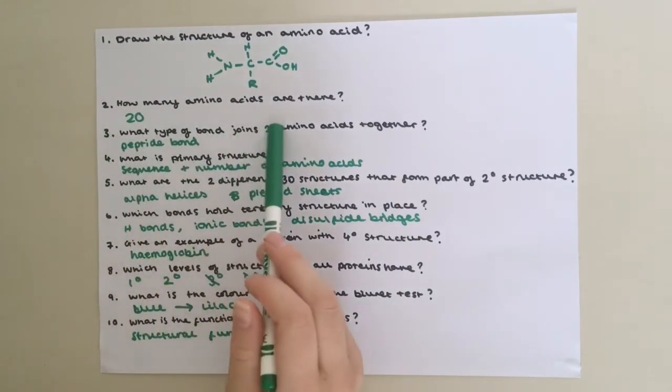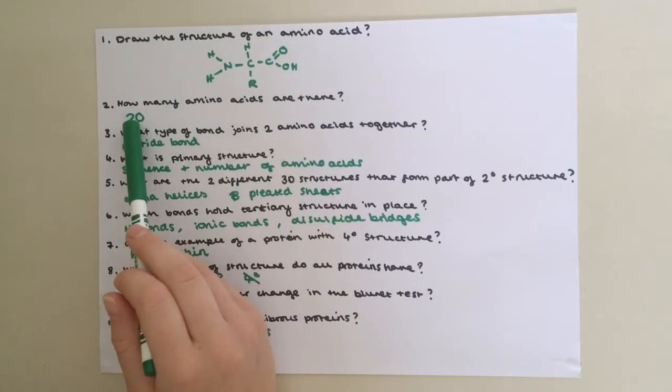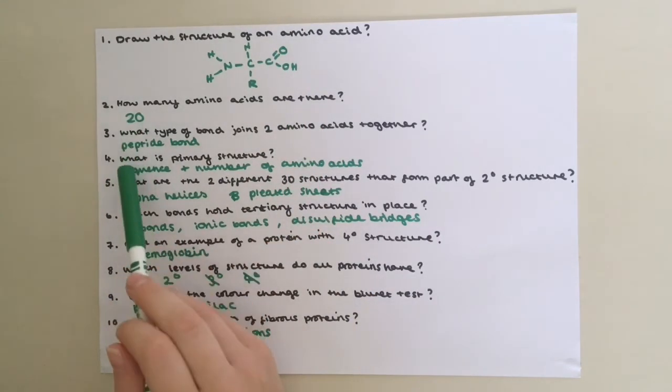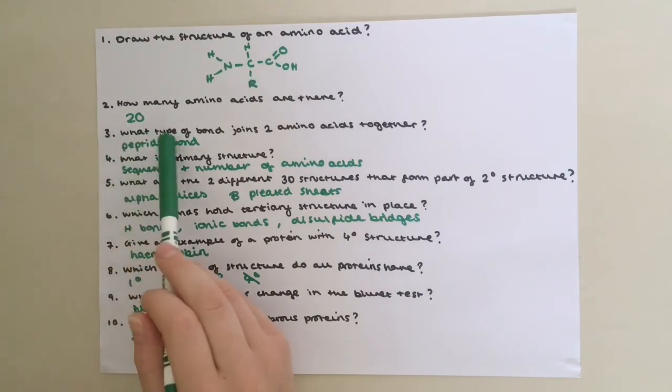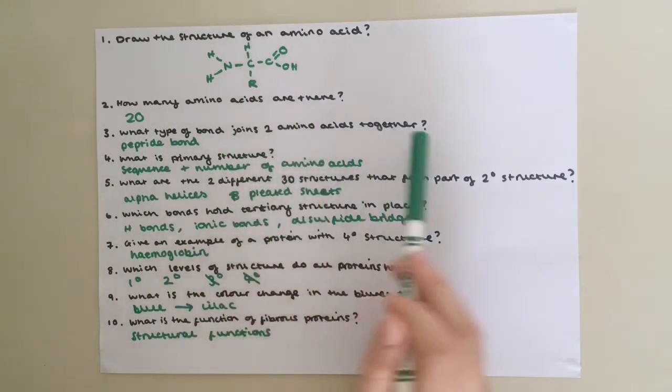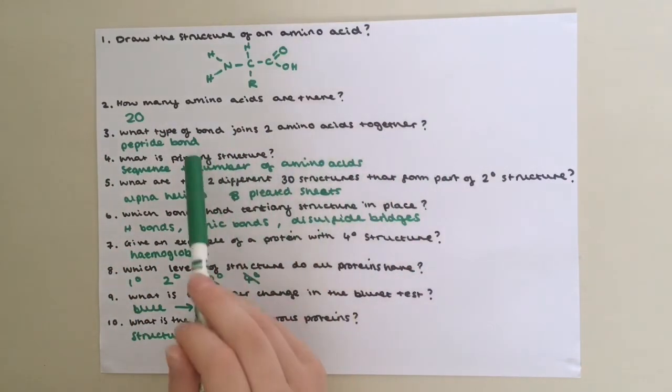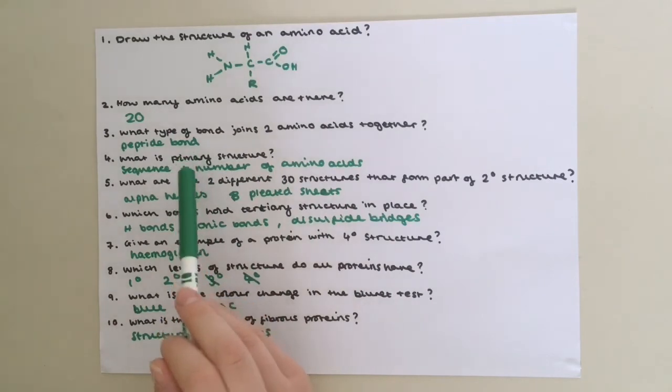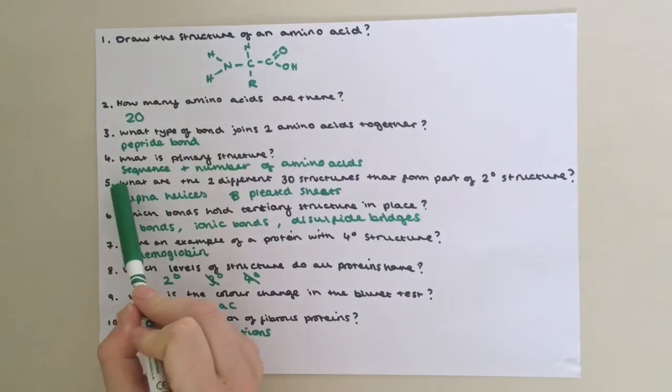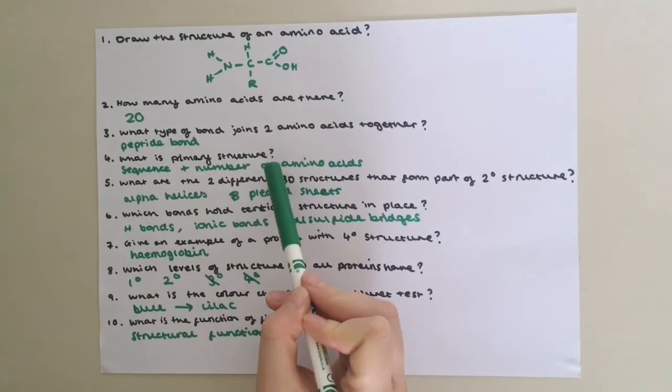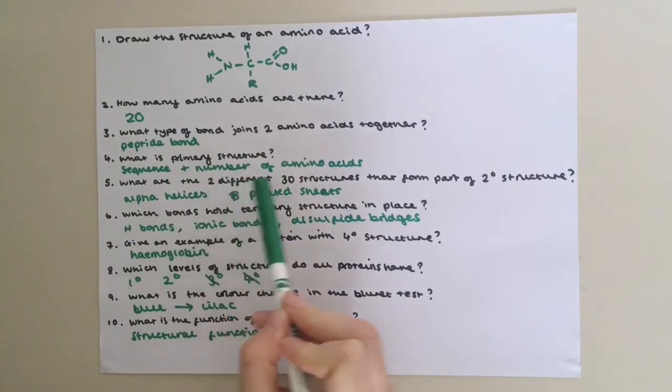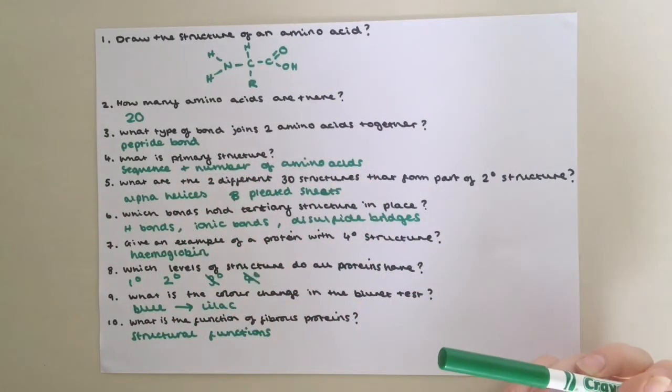Question two: How many amino acids are there? There are 20 naturally occurring amino acids. Question three: What type of bond joins two amino acids together? That is a peptide bond. Question four: What is primary structure? It is the sequence and the number of amino acids in a polypeptide chain.